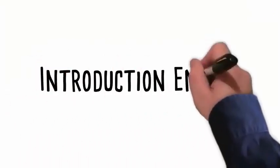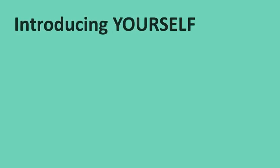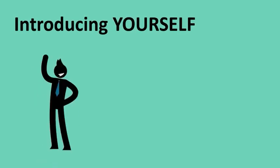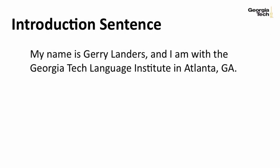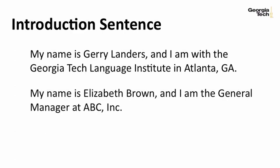Let's start off with the introduction email. If you're introducing yourself, obviously you would start off with yourself. For example: 'My name is Jerry Landers and I'm with the Georgia Tech Language Institute in Atlanta, Georgia.' Or: 'My name is Elizabeth Brown and I'm the general manager at ABC Incorporated.' If you're not currently employed, you can say that you are a student or that you've graduated recently. If this is the case, you should include the name of the school and your degree or certificate.